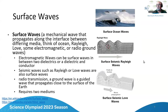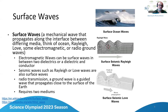Surface waves are mechanical waves that propagate along the interface between different media — ocean waves, seismic waves like Rayleigh and Love waves. Some electromagnetic waves also qualify as surface waves, where electromagnetic energy gets trapped near an interface and follows it — for example, radio ground waves. Electromagnetic waves can be surface waves between two dielectrics or a dielectric and a conductor, used in fiber optics and radar for stealth technology. Seismic Rayleigh waves go up and down as they propagate along the surface, while Love waves go side to side.